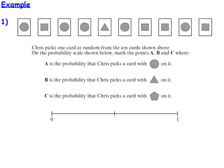So our first example, it says Chris picks one card at random from the deck of cards shown above. On the probability scale shown below, mark the points A, B and C. Where A is the probability that he picks a card with a circle on it, B is the probability that Chris picks a card with a triangle on it, and C, he picks a card with a pentagon on it. And here we have our probability scale going from 0 to 1. So let's work our way through it. Let's start off with A. So what is the probability that Chris picks a card with a circle? Well let's start off by counting the number of circles. So there's 1, 2, 3, 4, 5 circles.